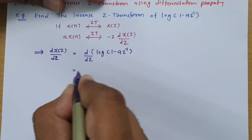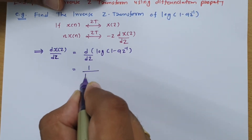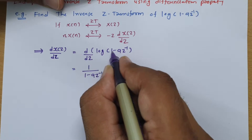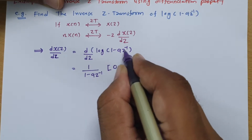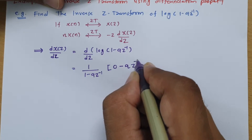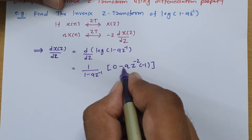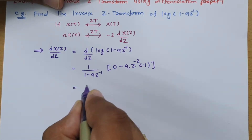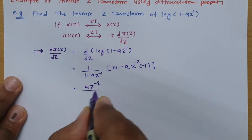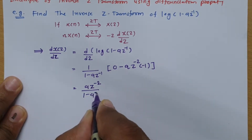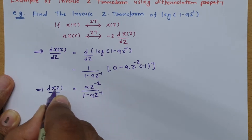If we do this differentiation: the differentiation of log gives 1 divided by that function, so 1/(1 - az⁻¹), multiplied by the differentiation of the inner term. The differentiation of 1 is 0, minus a is constant, and the differentiation of z⁻¹ is -z⁻² (i.e., z to the power -2 times -1). The two negatives cancel, giving az⁻² divided by (1 - az⁻¹). So dX(z)/dz = az⁻²/(1 - az⁻¹).